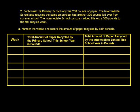Number two. Each week the primary school recycles 200 pounds of paper. The intermediate school also recycles the same amount, but had another 300 pounds left over from summer school — the intermediate school custodian added this extra 300 pounds to the first recycle week. Letter A: number the weeks and record the amount recycled by both schools. Week one: the primary school had 200 pounds, and the intermediate school had 200 plus 300, giving them 500. Go ahead and pause the video to complete the table.